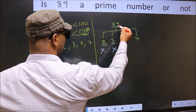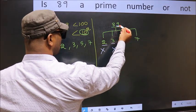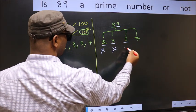Next number 5. Last digit is neither 0 nor 5. So this is not divisible by 5.